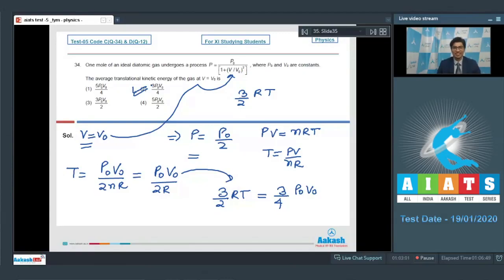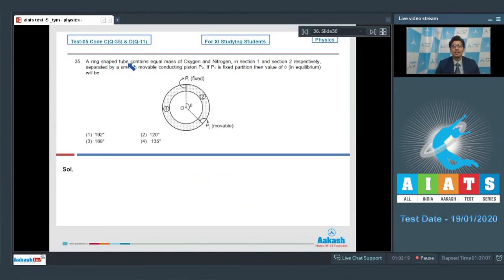Now, let us proceed to question number 35. Question 35 says, a ring-shaped tube contains equal mass of oxygen and nitrogen in section 1 and section 2 respectively, separated by a smooth movable conducting piston P2. If P1 is fixed partition, then the value of theta is.